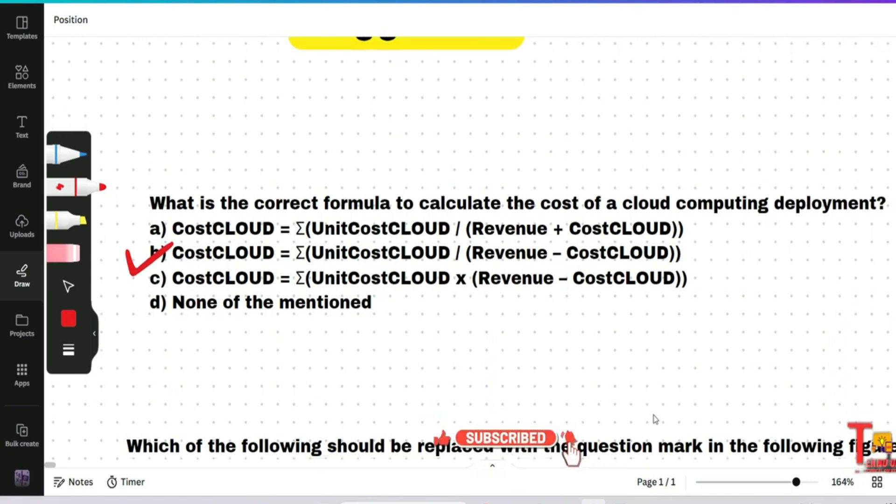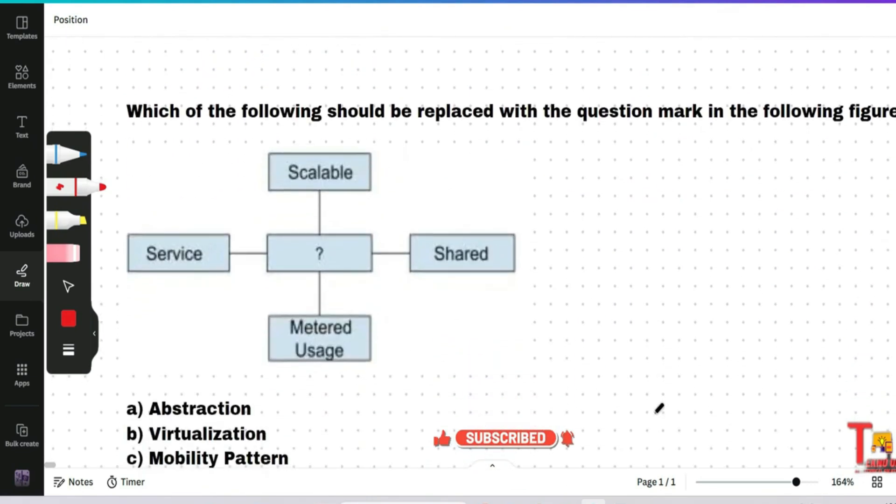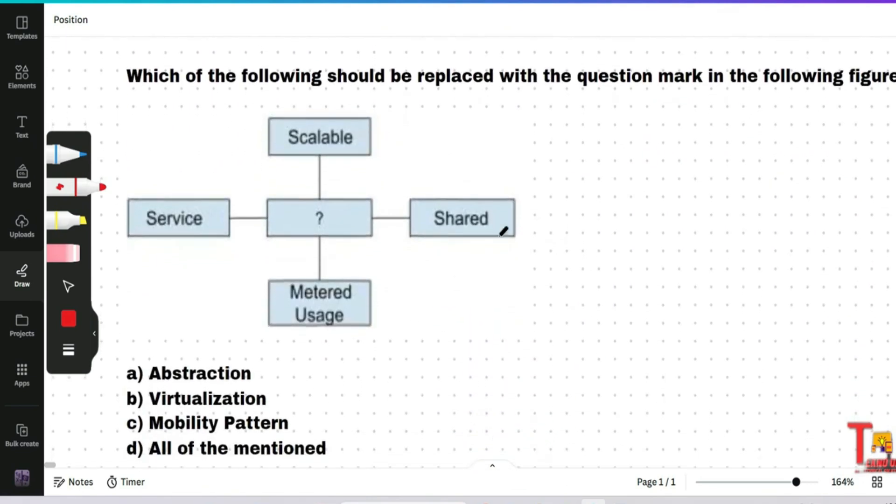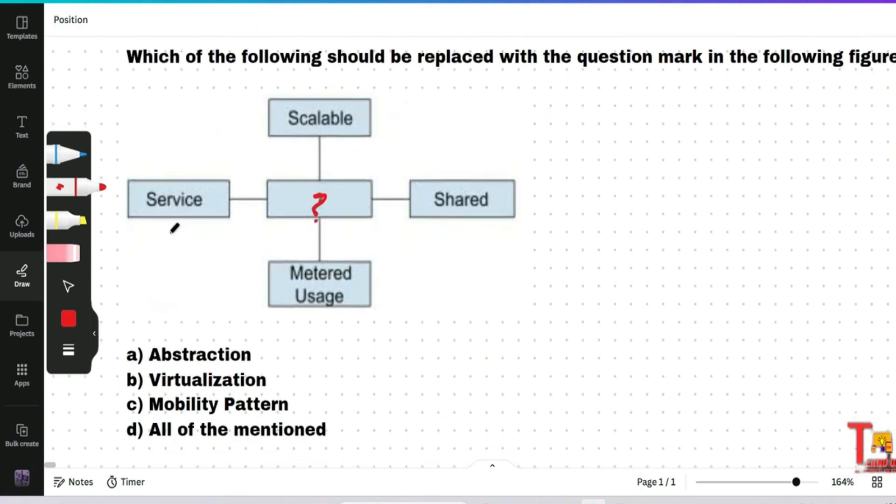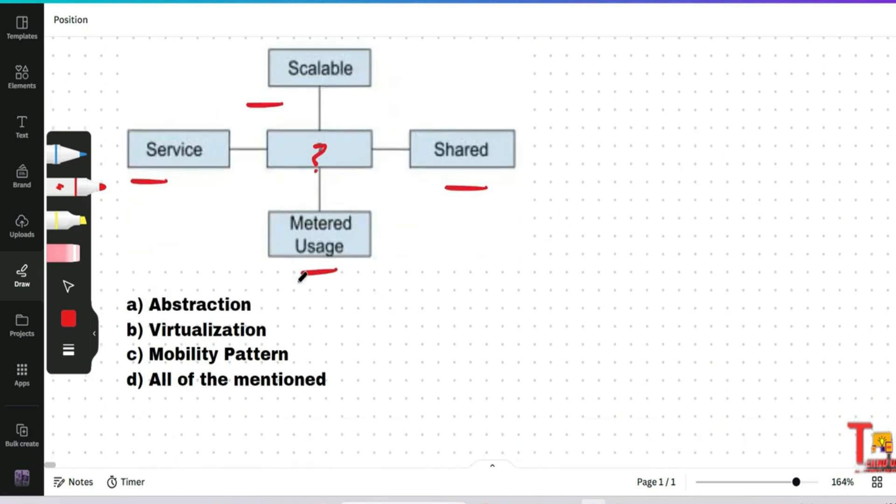Okay, the next question is which of the following should be replaced with the question mark in the following figure? So what should be the best suited here? Actually, service, scalable, shared, and metered usage are the key attributes of cloud computing. And the fifth attribute is virtualization. This is the key enabler of these four key attributes.